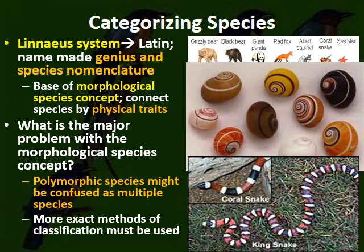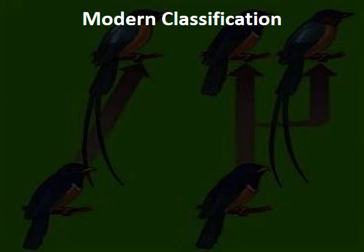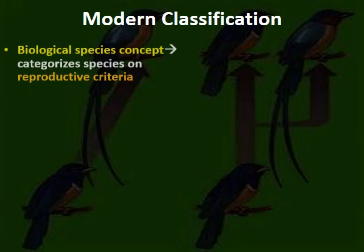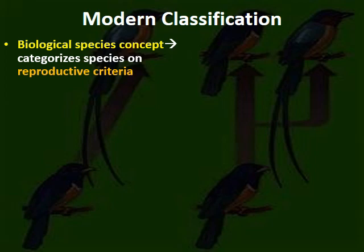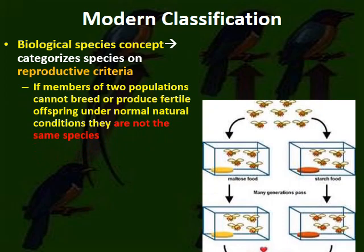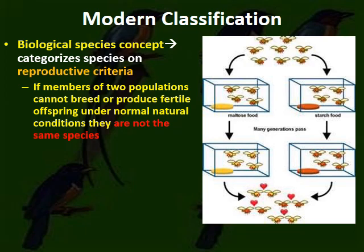Modern classification uses the biological species concept, not just morphological traits. We also look at DNA to show how closely related species are. The rule is: if members of two populations cannot breed, or cannot produce fertile offspring under normal natural conditions, they are not the same species. For example, if isolated fly populations fed on different food sources are reunited and can still reproduce, they are still the same species. If they cannot reproduce, they are now species A and species B.